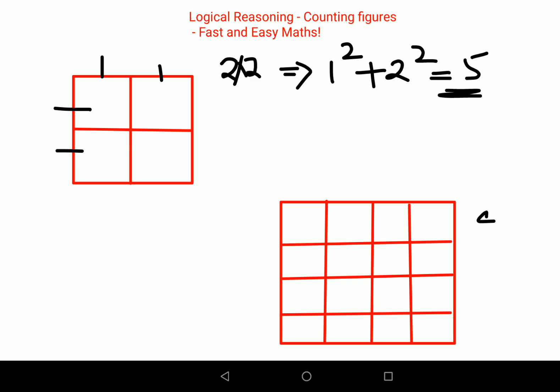Great. Now here I can say this is 4 by 4. So here again you will start with 1 squared plus 2 squared plus 3 squared plus 4 squared. You will go up to the total number of grid.